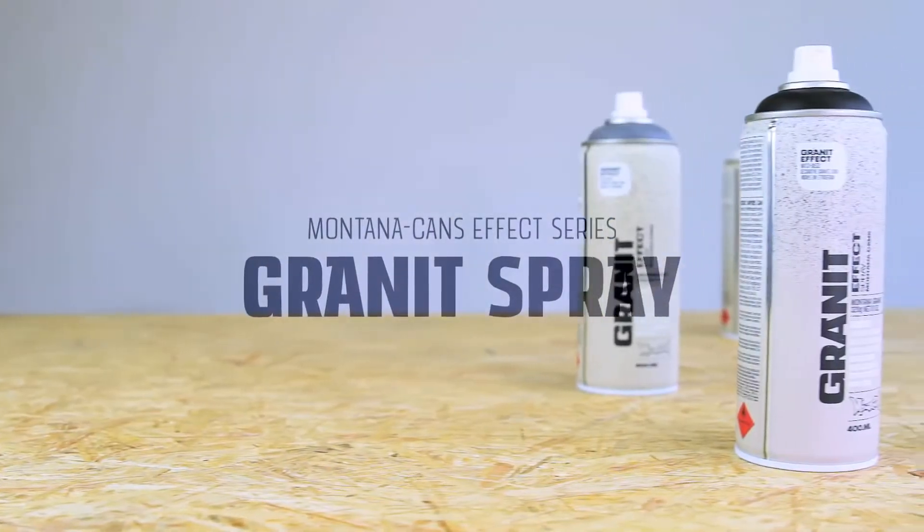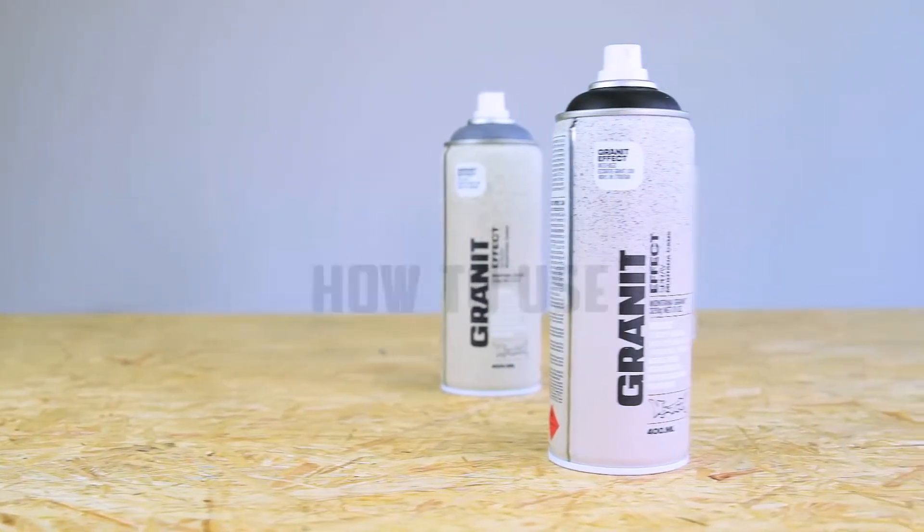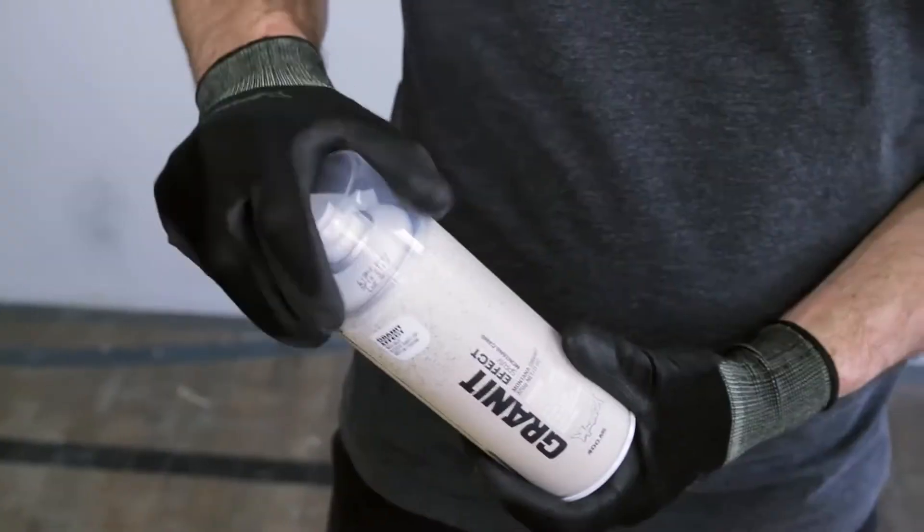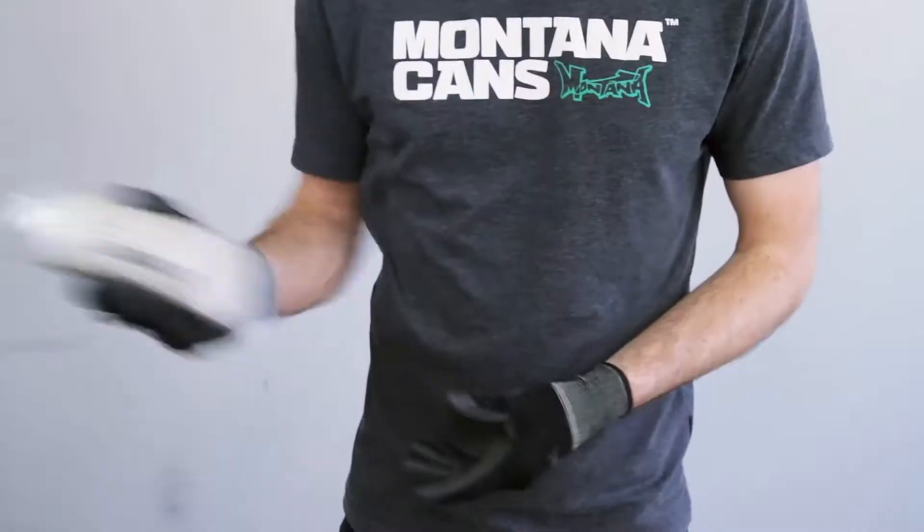Montana Granite Effect is a water-based special spray paint for deceivingly realistic granite effect. Surfaces should be clean and dry. Remove cap and shake can well for two to three minutes.